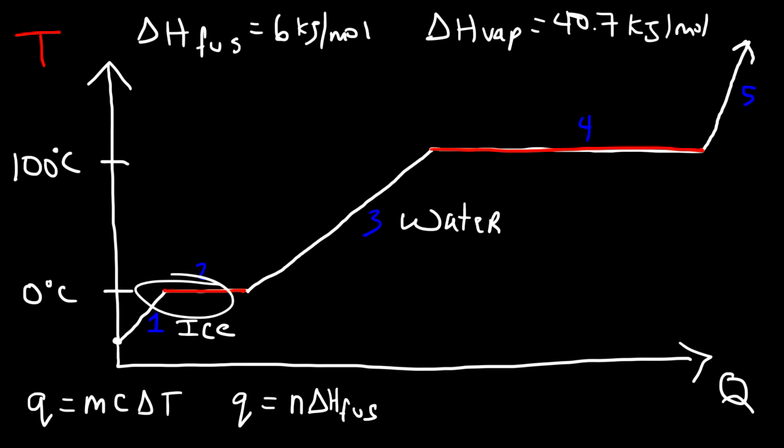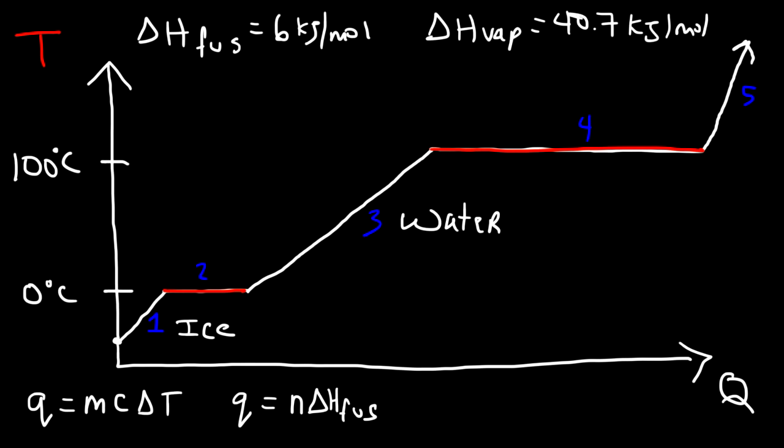During segment two the heat energy added is converting ice to liquid water, and the temperature is constant during a phase change. The energy added doesn't go into the kinetic energy of the molecules because the temperature isn't changing. When temperature is constant and you're adding energy to the system, you're increasing the potential energy rather than the kinetic energy.